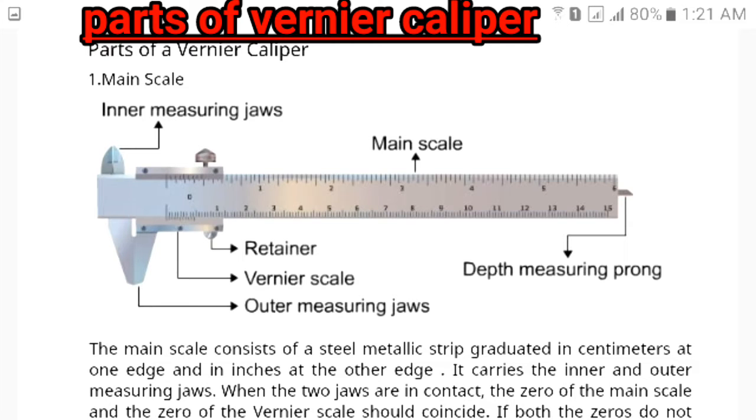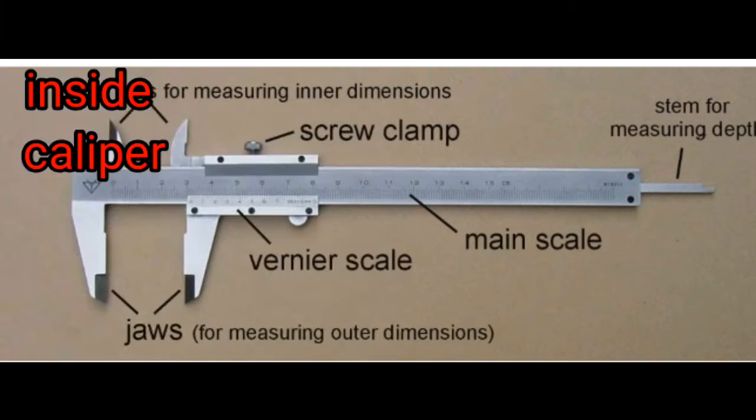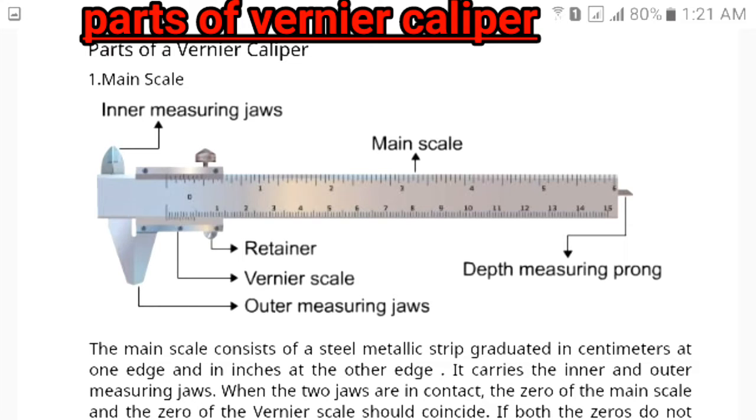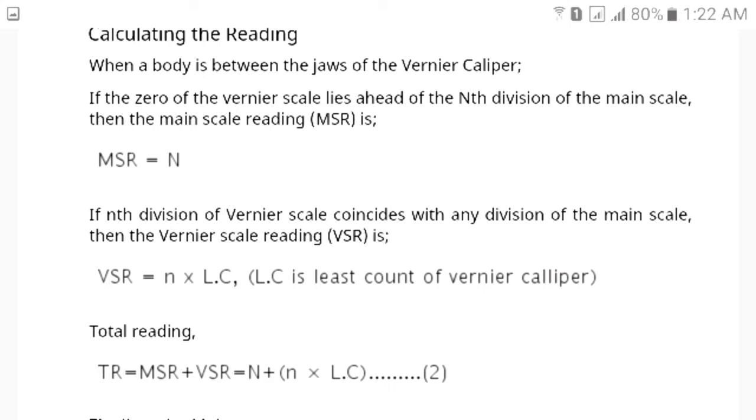Main parts of vernier caliper: upper jaws, lower jaws, retainer, main scale, depth probe, vernier scale, and locking screw.